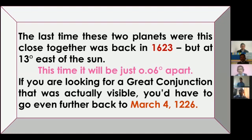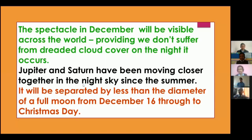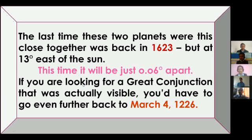In every conjunction, the difference between Saturn and Jupiter varies, so it wasn't always visible. The great conjunction which happened in 1623 had Saturn and Jupiter as close as they will be on the 21st, but they were just 13 degrees east of the Sun, so it was too hard to see them. If we have to find a conjunction which was visible in the sky and as close as it will be, we have to go back to March 4, 1226. So this great conjunction is happening after 800 years.